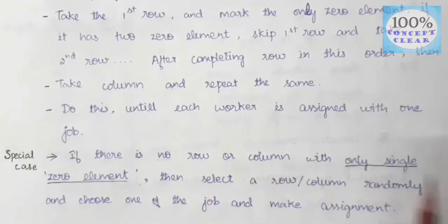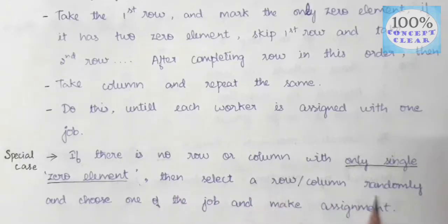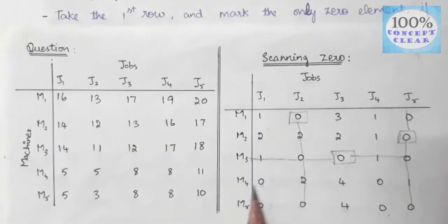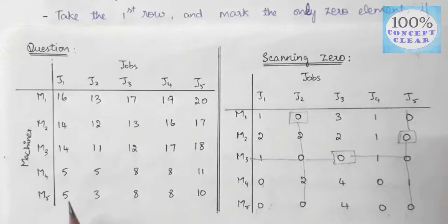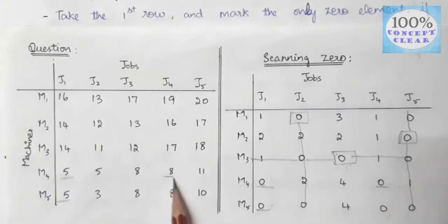There is no row or column with only a single zero element. We have two zero elements remaining. What do we do? We select a row or column randomly and choose one of the jobs and make an assignment. In this case, we have two zeros in the fourth row and two zeros in the fifth row.